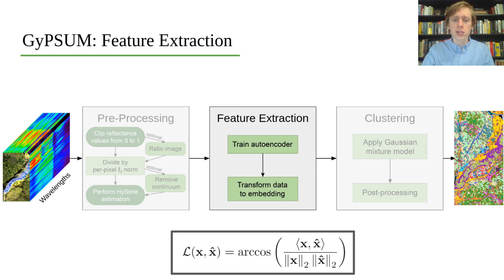Using spectral angle allows for invariance to relative magnitude, which results in decreased sensitivity to network initialization, and increases the cost in small-scale variation, which helps to capture small features in the spectra. Learning a per-pixel embedding for each image allows for robustness to various mineral abundance distributions and varying systematic instrumental and environmental noise.